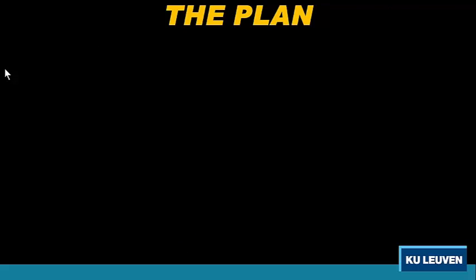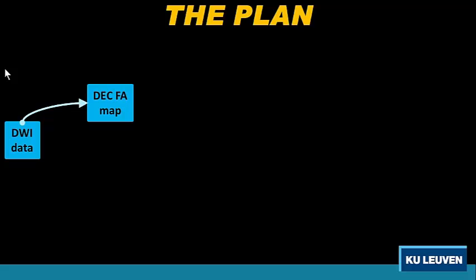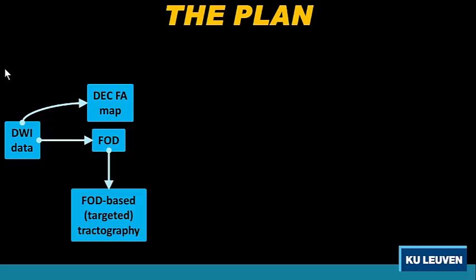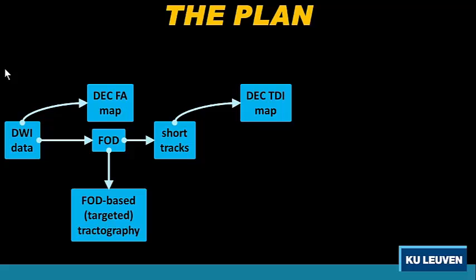Let me introduce you to my other friend — the plan — because it's getting quite confusing. We started with some DWI data. We showed the DEC FA map. We showed the FODs on top of them. I told you that we can use those for targeted or general tractography, which meant we could generate a large short tracks tractogram, because our aim was to come up with the TDI or the DEC TDI map. That's all fine, and you can see some repeating structure in there.